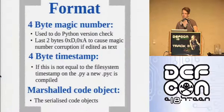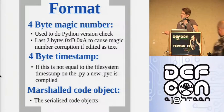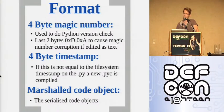The .pyc format has a four-byte magic number indicating the Python version, allowing the runtime to check and bail out if there's a version mismatch. There's a four-byte timestamp — important for deciding whether a new .pyc should be generated from a .py. And there's a marshal code object, which is the actual serialized code object where the Python code resides.